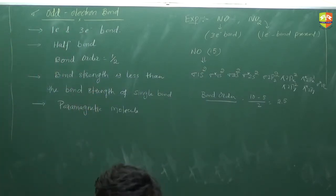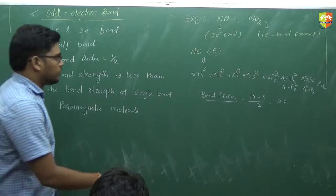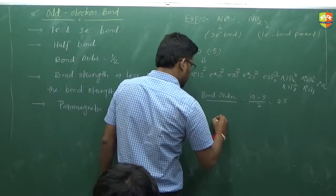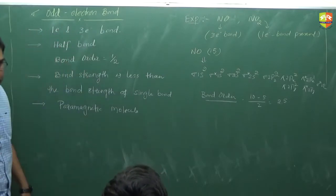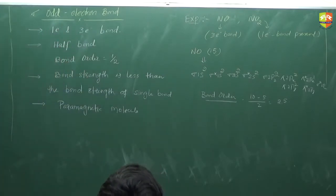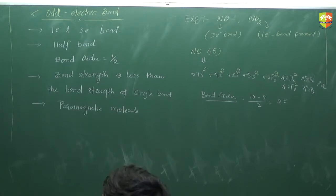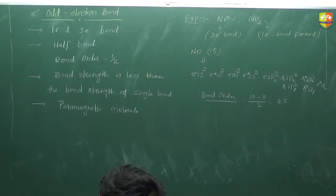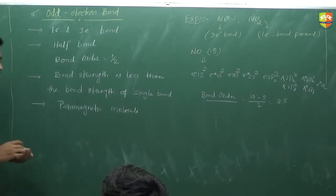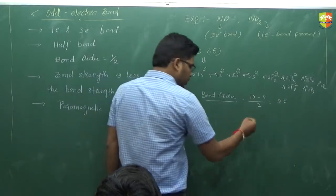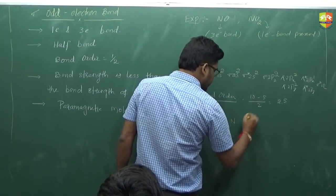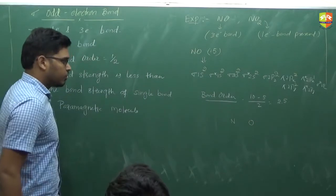That bond order of 2.5 means it has an odd electron bond — that extra 0.5. Can you draw the Lewis structure of NO? The Lewis structure fails for odd electron molecules because you won't get a whole-number bond there, and that's why it is different.